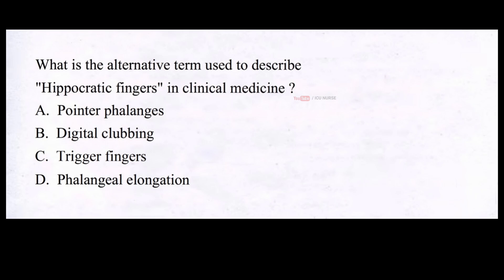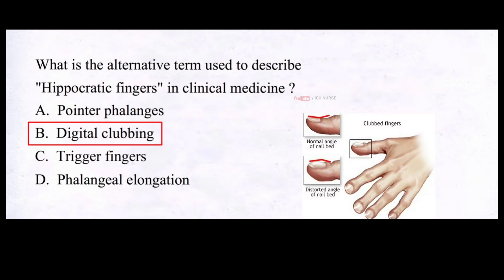What is the alternative term used to describe Hippocratic fingers in clinical medicine? A. Pointer phalanges. B. Digital clubbing. C. Trigger fingers. D. Phalangeal elongation. The correct answer is B: digital clubbing. Hippocratic fingers, or clubbing, are a clinical sign characterized by nail and fingertip changes indicating underlying medical conditions. Clubbed fingers appear swollen with nails curving around the fingertips, typically linked to lung or heart issues. Recognizing clubbing helps diagnose and manage related health conditions effectively.